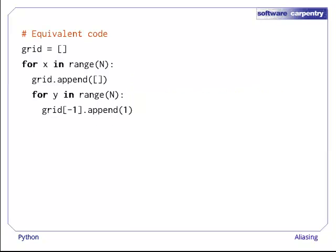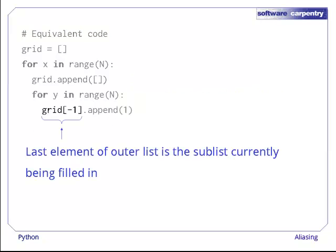Here's the same code with a small optimization. Instead of temporarily storing the sublist being created in a variable called temp, this code just appends an empty sublist to the outer spine and then starts filling it in place, using grid at minus 1 to refer to it.